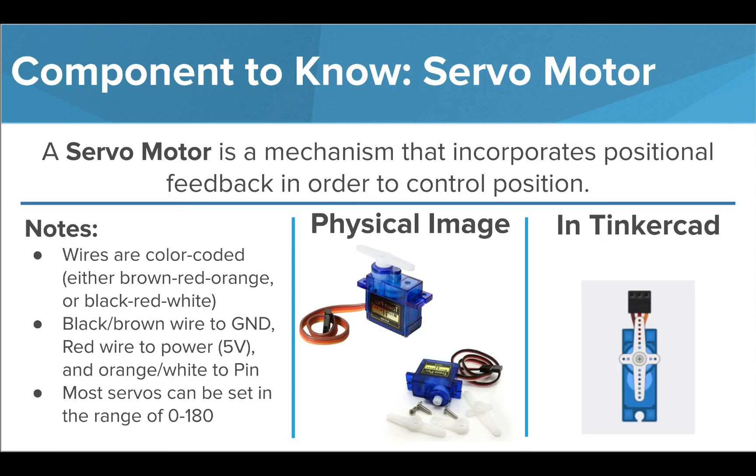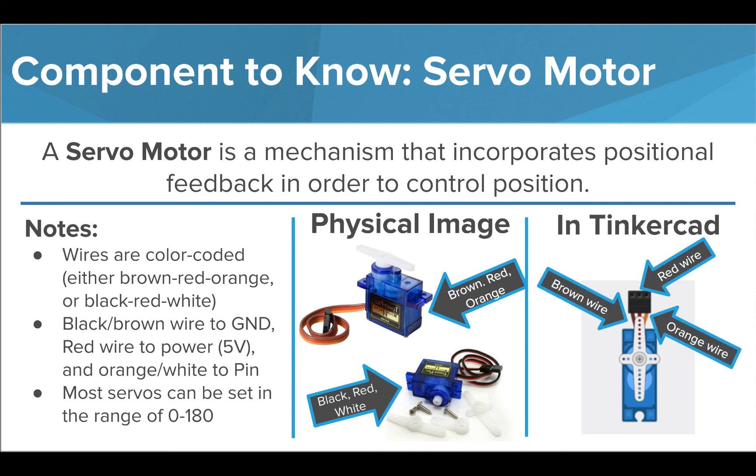During your next exploration, you'll be using a new component, a servo motor. This motor uses a feedback system to control position. Many servo motors can be set to positions from 0 to 180. You'll explore more about this functionality in the next exercise, but it is important to note that the wires on a servo motor are color coded, either using brown, red, and orange wires, or black, red, and white wires. The brown or black wire is always connected to ground, the red wire is connected to power, and the orange or white wire is connected to an Arduino pin. In Tinkercad, you can see a bit of the wire colors near the connector, but if you hover over each port, it will tell you what it should be connected to.